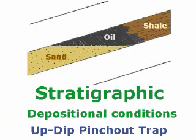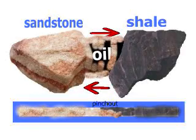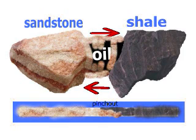Here is an example of a stratigraphic fault, also known as an up-dip pinch-out trap. This is where sandstone slowly turns into shale. Remember that shale and sandstone are both sedimentary rock, but because shale was made from clay and mud it is not porous, where the sandstone made from sand is.